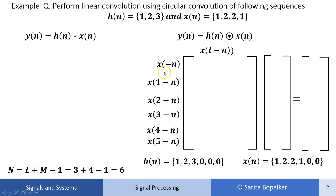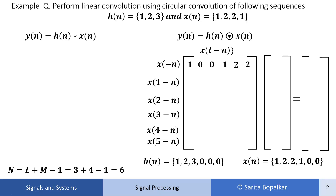Now let's compute x[-n]. This is a circular folding operation. In circular folding, the first sample stays as it is and the other samples are written in reverse order. So x[n] = {1, 2, 2, 1, 0, 0}. The first sample is 1, and the other samples written in reverse are {0, 0, 1, 2, 2}. So x[-n] = {1, 0, 0, 1, 2, 2}. This is the circular fold.